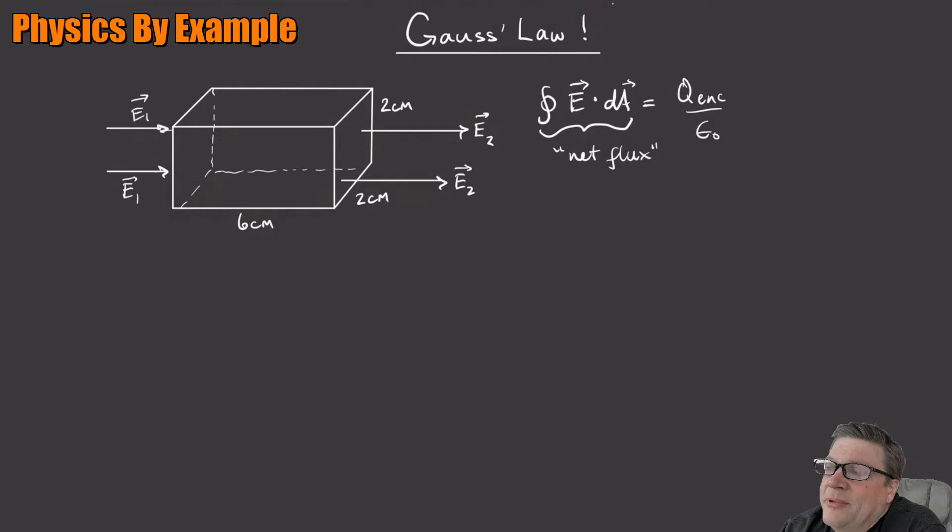Okay, so look at this example. Here I've got a rectangular box with certain dimensions. I have an electric field, and again, just to be simple, just so we can get this in our heads, just take the electric field going to the right, in the x direction. So I have E1 going to the right and E2, and those are different.